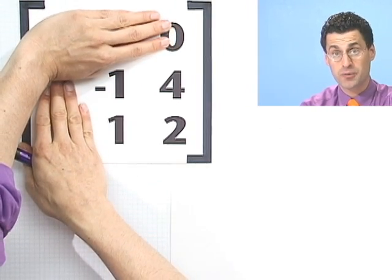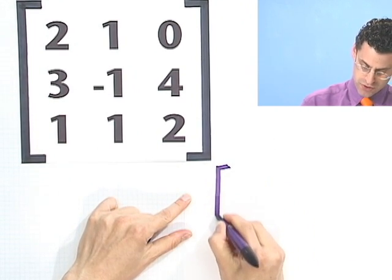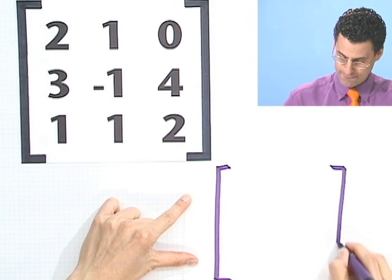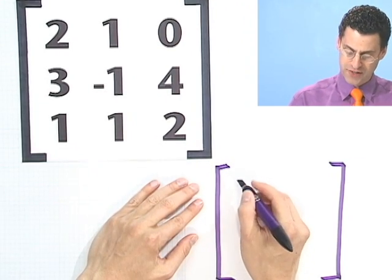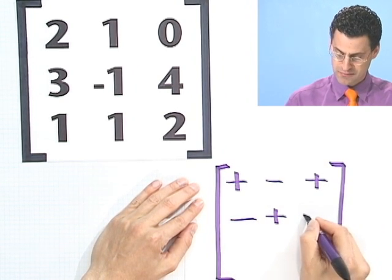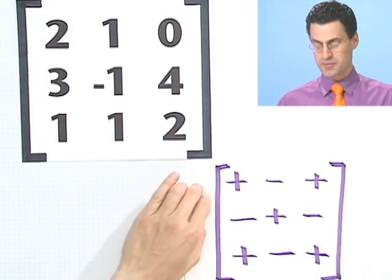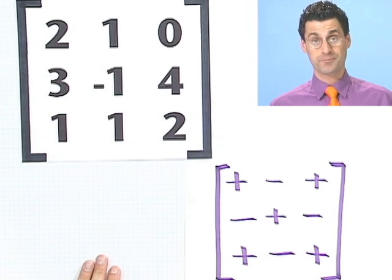Unfortunately, the diagonal method doesn't generalize to higher-dimension matrices. So let me show you a way that always works — the divide and conquer method. Once you know how to find determinants of 2x2 matrices, use that to find determinants of larger matrices. First, make a sign chart. You put in a sign for each position of the matrix, start with a plus, and alternate: plus, minus, plus, minus, plus, minus, plus, minus, plus. You get a checkerboard-looking pattern.